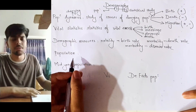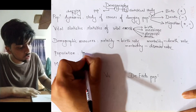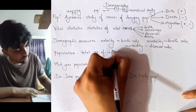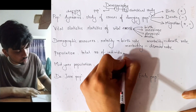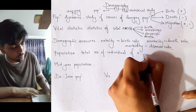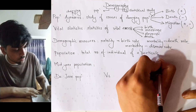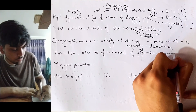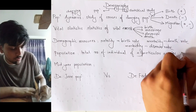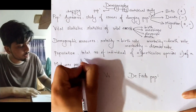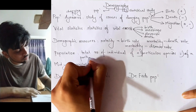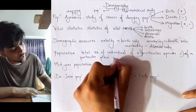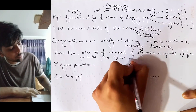What is population? It is the total number of individuals of a particular species, at a particular place, and at a particular time. These three criteria must be fulfilled to define a population.